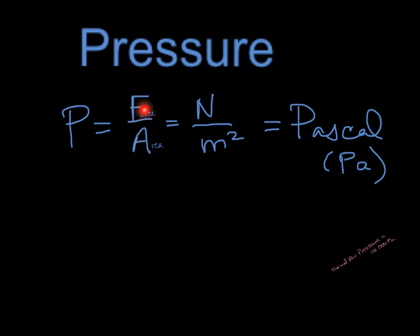Okay, so the SI unit for force is a newton. The SI unit for area, remember, area is like length times width, so that's meters times meters, so that gives us meters squared.